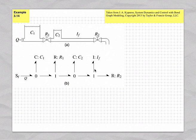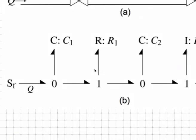Let's start by applying causality to the bond graph. We have one source — it's a flow source. So, if we specify flow into the zero junction, this will not propagate any further.